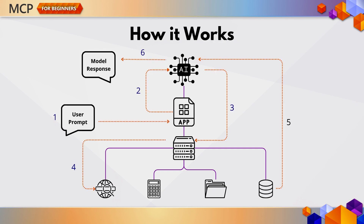Here's how it works. The client sends a user prompt to the model. The model realizes it needs external help. It sends a request via MCP to the server. The server executes the tool, returns a result, and the model completes its response.